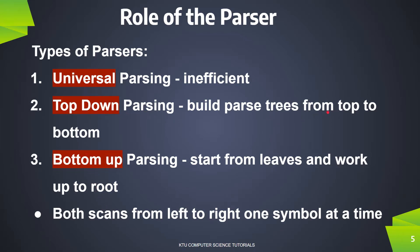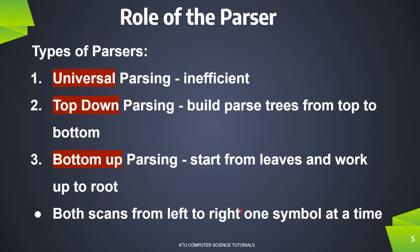Top-down parsing builds parse trees from top to bottom, rotating down to child nodes. The third method, bottom-up parsing, is to start from leaves and walk up to the root. In the case of leaf nodes, we use the root nodes.